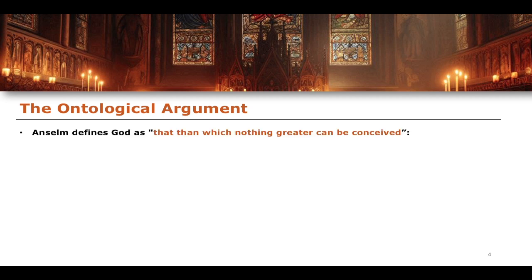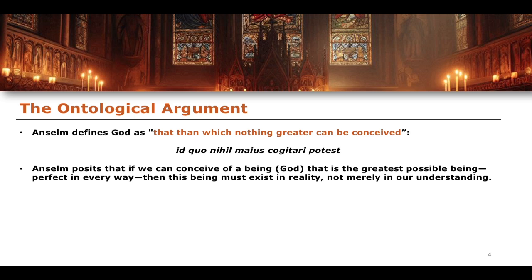The ontological argument begins with a definition of God. Anselm defines God as 'that than which nothing greater can be conceived,' placing a particularly high standard on the definition. He is essentially concluding that God is the greatest thing that could ever be conceived — there could be nothing conceived that is better than or greater than God. Anselm posits that if we can conceive of a being that is the greatest possible being, perfect in every single way, then there could be nothing conceived that is greater.